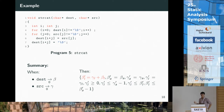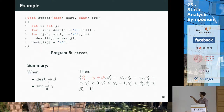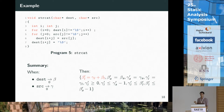A more interesting example is the strcat function. Under some conditions we performed the analysis and inferred the following summary — showing only the numerical part, not the shape part — which states that the length of the string pointed to by dst at the end is the sum of the two lengths at the beginning, which is exactly what we wanted.